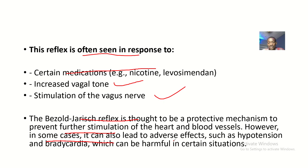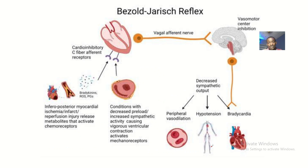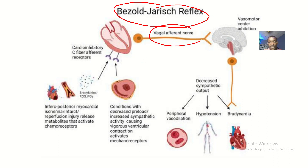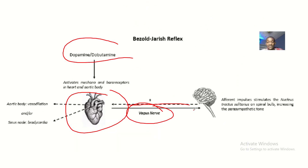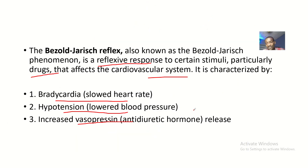However, in some cases it can lead to adverse effects such as hypotension and bradycardia, which may be harmful in certain situations. To summarize, the basal gyrus reflex involves stimulation of the vagus nerve causing bradycardia, hypotension, peripheral vasodilation, and increased release of vasopressin — that's anti-diuretic hormone.